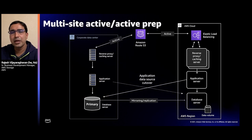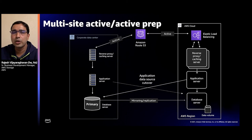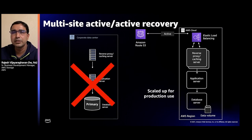In the multi-site active-active approach, there is near-zero RPO and RTO because applications run on both primary and secondary sites simultaneously. When a failover event occurs, there's essentially no failover — one side goes down and the other, already functioning, takes over seamlessly. This is the most expensive DR strategy, as you are running applications on two different sites at all times.